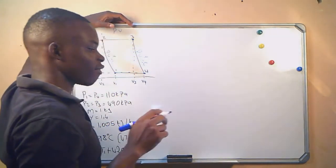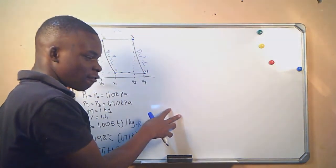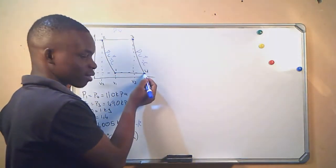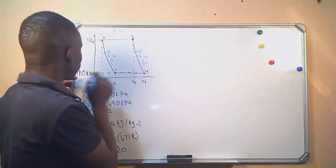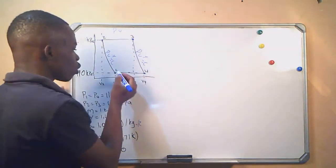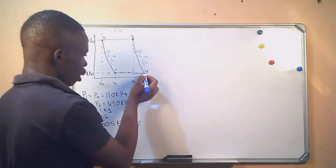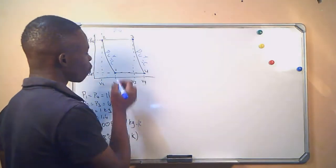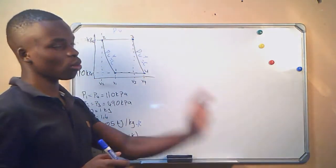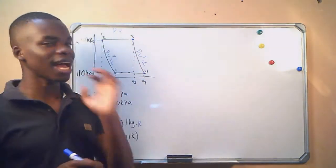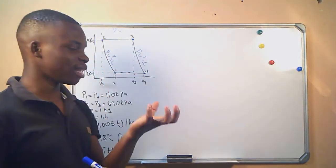Finally, heat is transferred at constant pressure from the air, meaning heat is lost, until initial conditions are reached — back to point 1 where everything started. We come back from point 4 to point 1. If they give you a scenario, read it carefully and try to derive the correct PV diagram from that scenario, because we may not be used to this type of cycle structure based on the topics already covered.